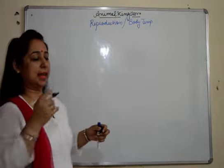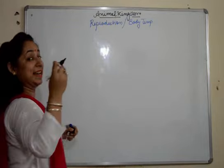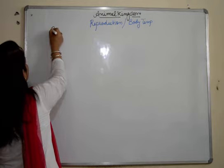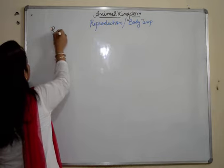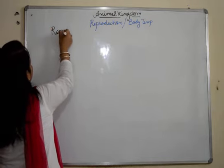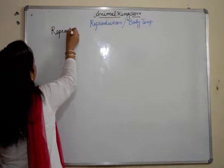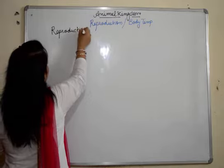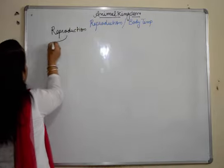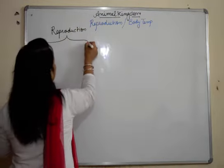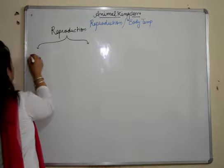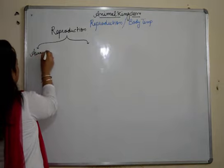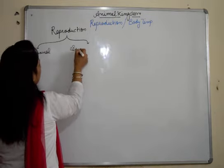When we talk about the reproductive system, on the basis of reproduction, organisms are basically categorized into two main categories: Asexual and Sexual.